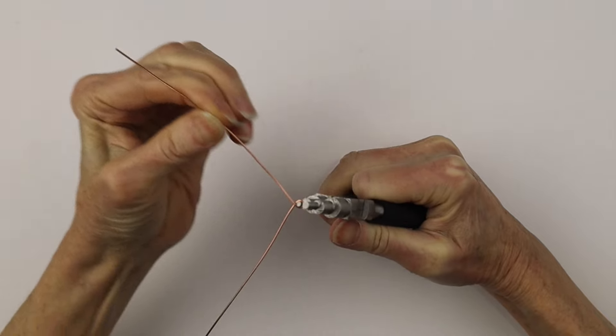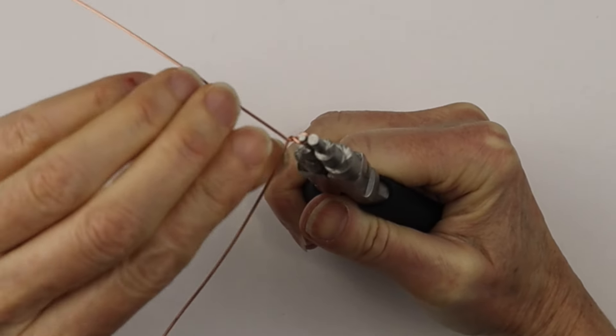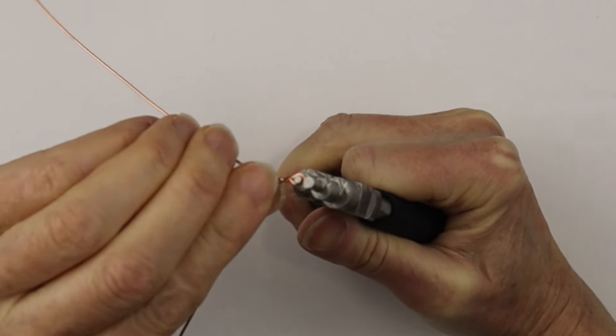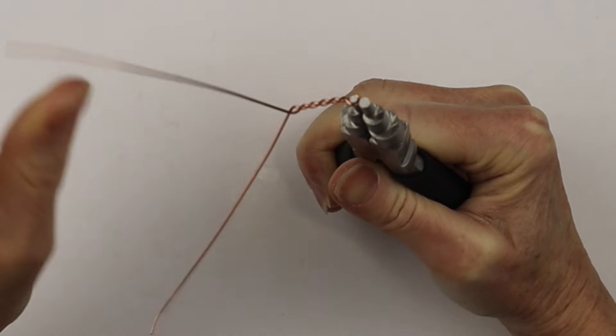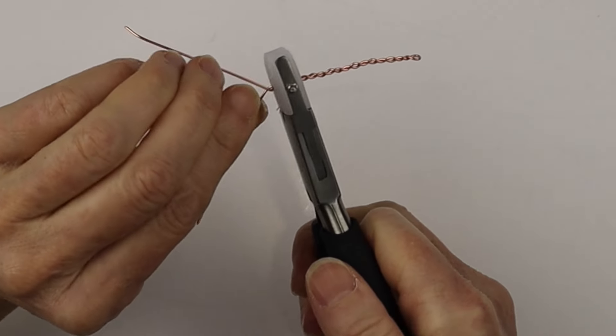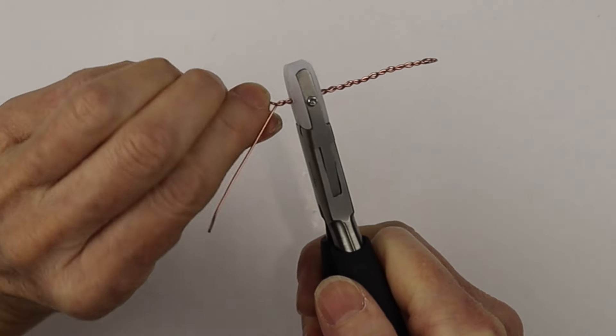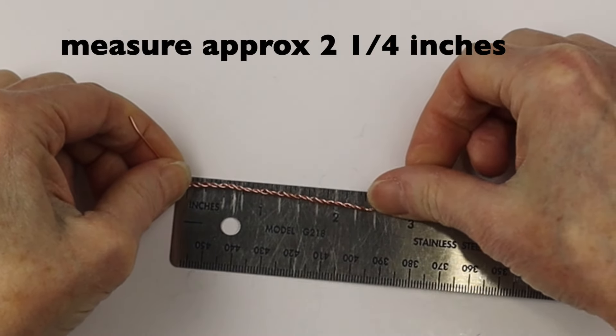We're going to make a loop and crisscross the wires and then twist them, holding the wires with your thumb and finger, keeping them spread out at an equal angle. And then when you get a little further along you can hold it with the nylon jaw pliers and we're going to measure about two and a quarter inches depending on how big you want to make your loop.